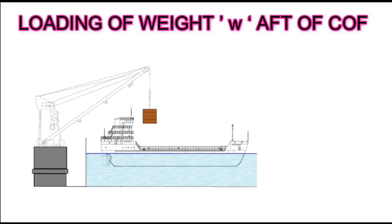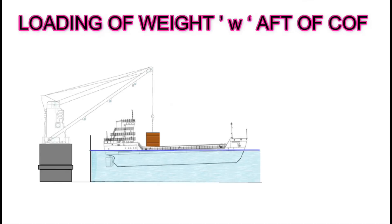In this case, we have an initially even keel vessel and we are loading a weight W on the aft of COF. As you can see, when the weight is loaded aft of COF, the aft draft increases and the forward draft decreases.